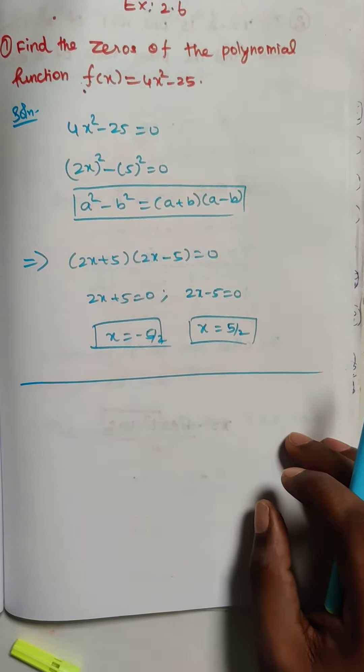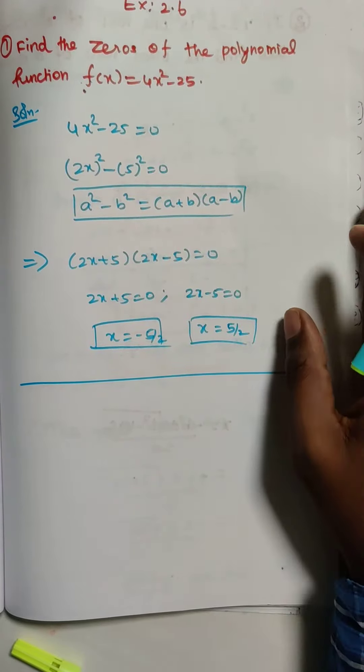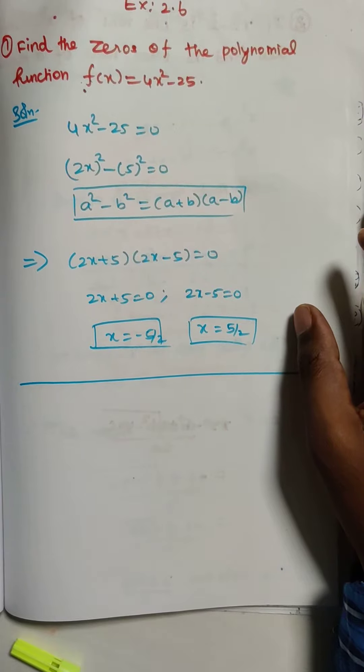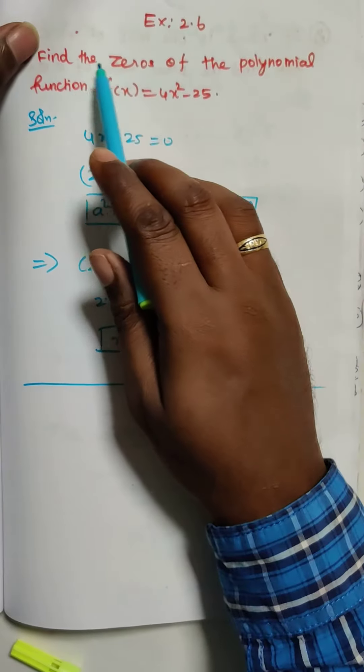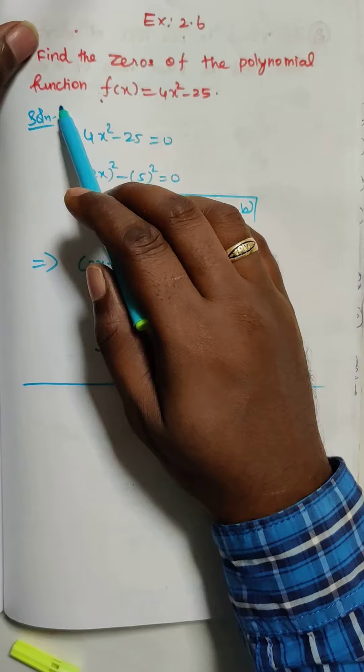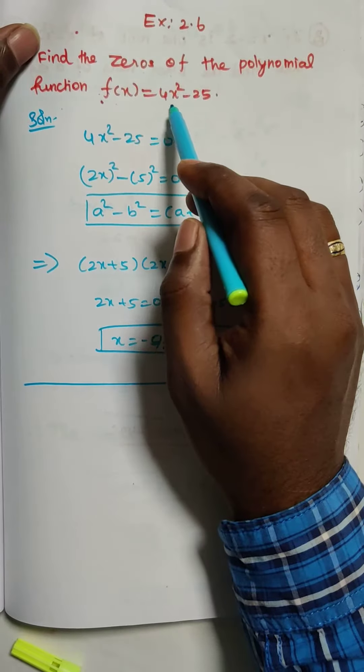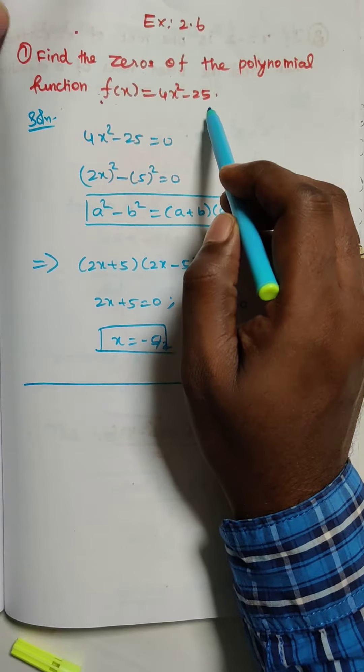Hi students, today we are going to discuss exercise 2.6, question number 1. Find the zeros of the polynomial function f(x) = 4x² - 25.